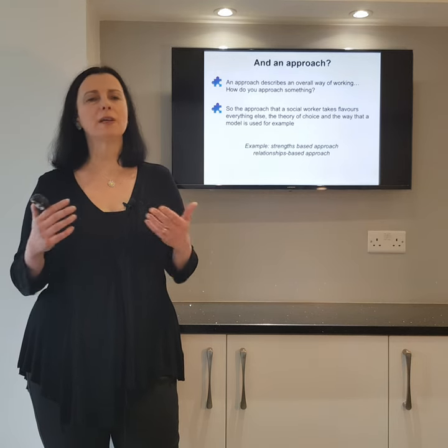In summary: an approach is your overall way of going about something; a theory provides you with a way to understand a situation or what's happening in a person's life; a model gives you a structure to intervene — it provides an intervention strategy; and a method is a specific tool or technique generally drawn out of a model, which is of course flavored by an approach. All of this is connected together.